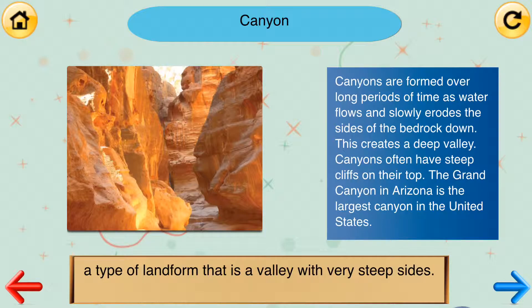Canyon: A type of landform that is a valley with very steep sides. Canyons are formed over long periods of time as water flows and slowly erodes the sides of the bedrock down, creating a deep valley. Canyons often have steep cliffs on their top. The Grand Canyon in Arizona is the largest canyon in the United States.